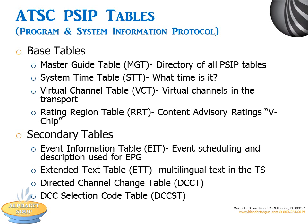The Event Information Table, or EIT, contains the event or program description and scheduling information for the EPG. The Extended Text Table, or ETT, includes multilingual text in the digital transport stream. Directed Channel Change is the means for the broadcaster to direct the TV tuning to a virtual channel based upon various criteria. DCCT indicates that alternative programming is available, and the DCCST is an expansion of the selection codes to allow for system growth.